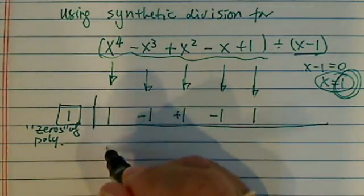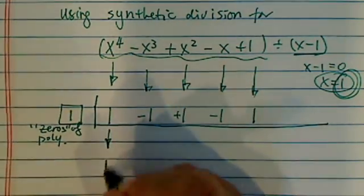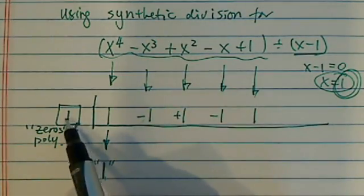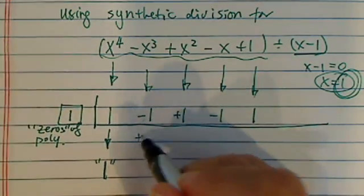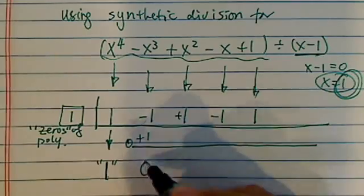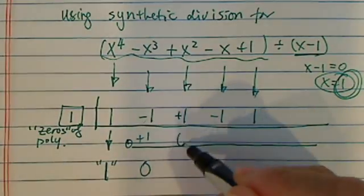And then what you do is you write down the first term. This thing is, we call it a lazy term. We don't do anything with it. And then what you do is 1 times this number, which is positive 1. Draw a line here to remind yourself I'm going to add everything. So I have a 0 here. 1 times 0 is 0.